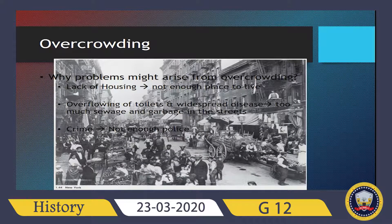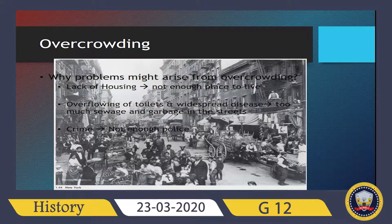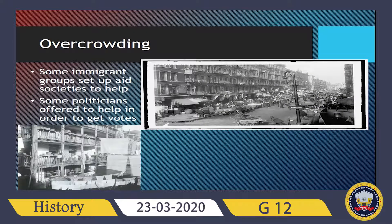What problems might arise from overcrowding? First, lack of housing — not enough homes for families. Second, overflowing toilets and widespread disease — when large numbers of people live together, epidemic diseases spread. Third, crime — back then America had a high rate of crime because there was a shortage of police. Some immigrant groups set up aid societies to help. Some politicians also offered help in order to get votes.